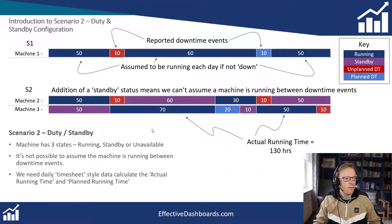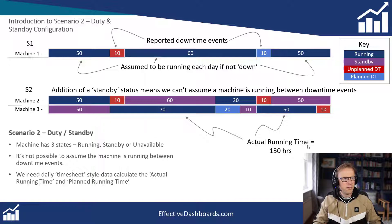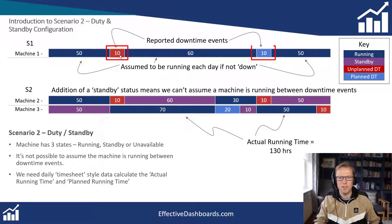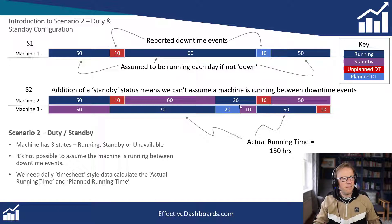Before I kick off, I want to spend a few minutes going through the differences between the two scenarios. The first one — the data we had was just the downtime events: the start and end of those events. We then filled in the blanks, so between two events we just assumed the machine would be running.